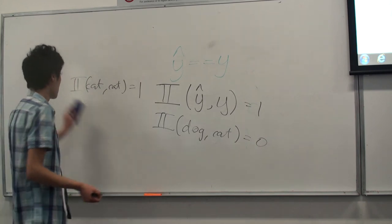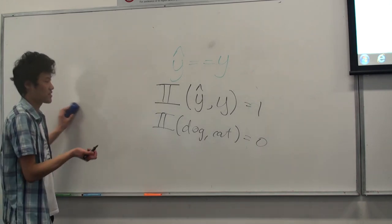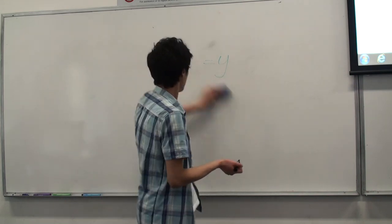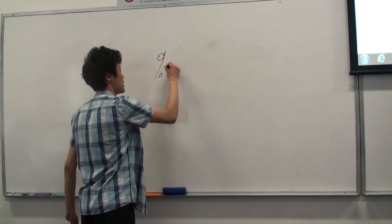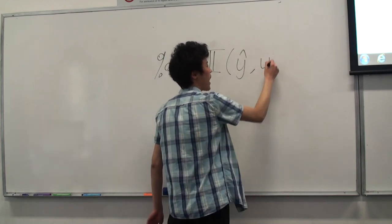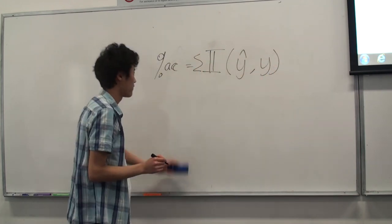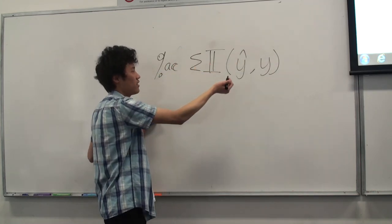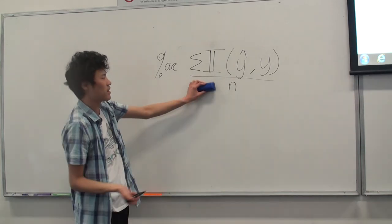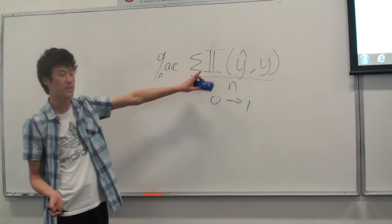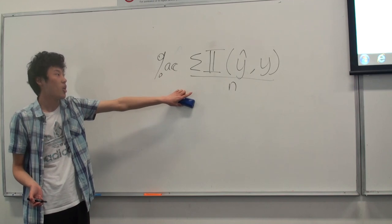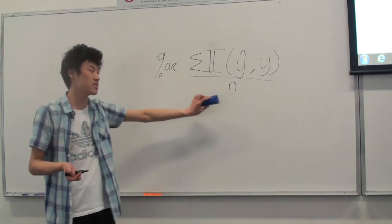Now we can compute the cost. The total accuracy equals the sum of the indicator function of your prediction equal to y, divided by n — the size of ŷ. This gives a number between 0 and 1 representing your prediction's percent accuracy. This is how we compute the accuracy for a discrete variable, not continuous.